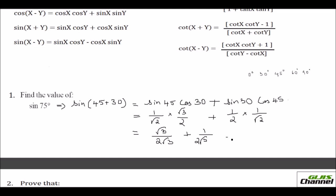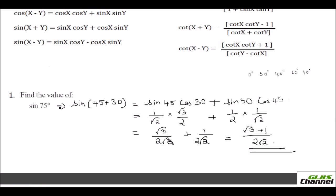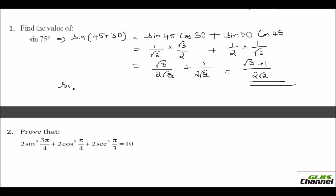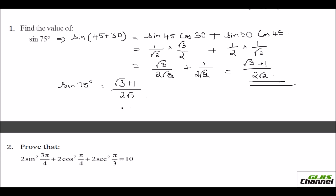You can add these together. So this would be the answer for sin 75°. If you want, you can explicitly write sin 75° equals (√3 + 1) / (2√2).